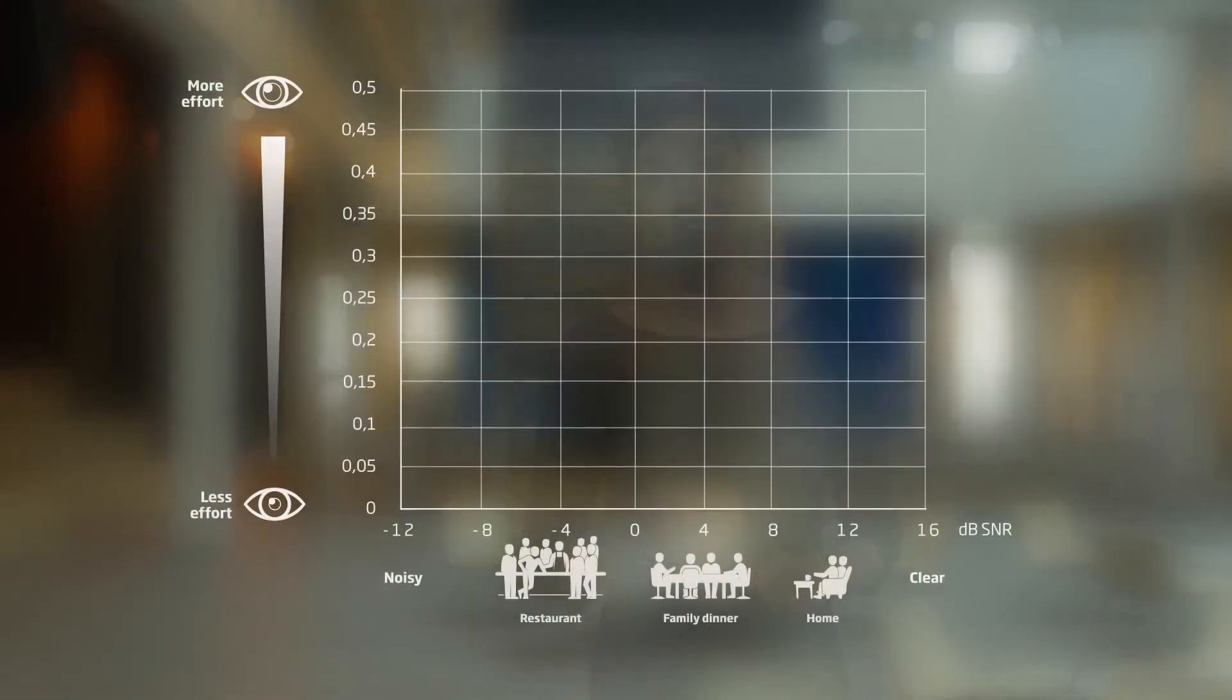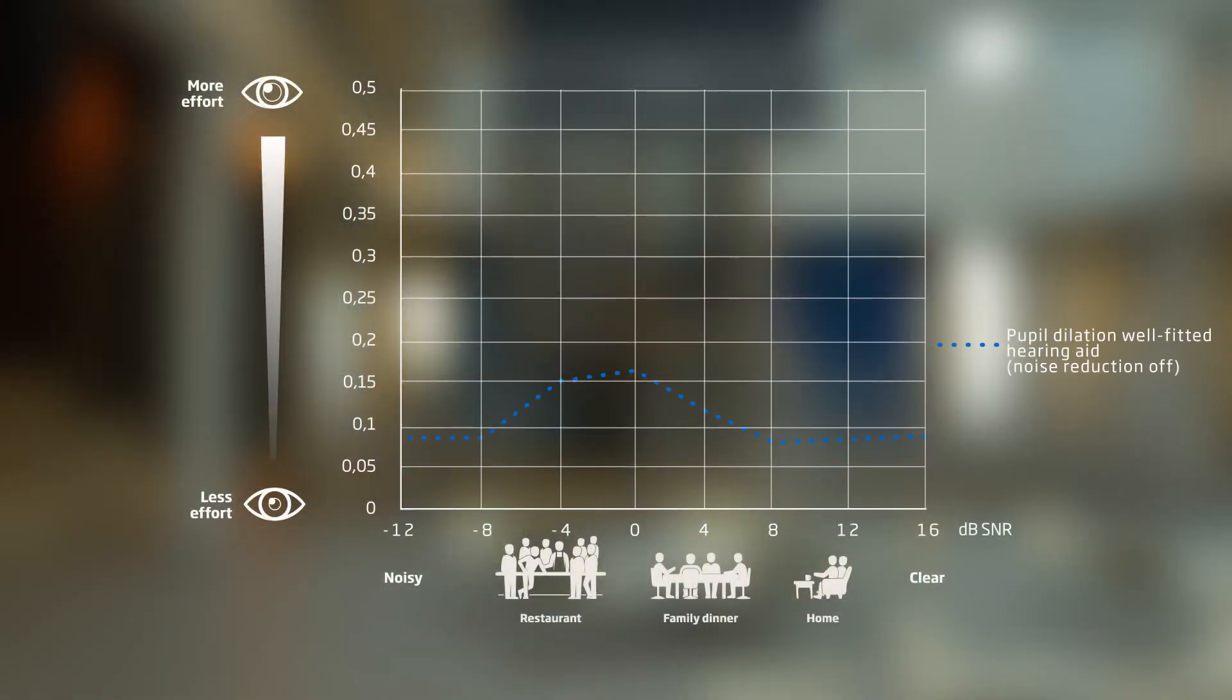And that is what is reflected in this illustration. The blue dotted line shows the pupil dilation of people fitted with hearing aids with no noise reduction. Situations with little or no interfering background noise do not require so much effort from the listener. However, as soon as the noise is introduced, it quickly becomes more demanding.